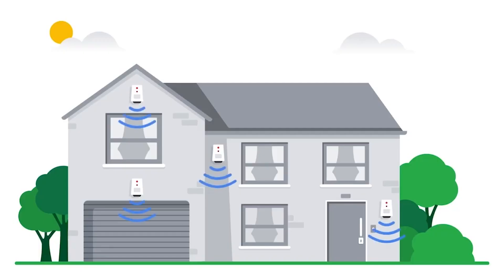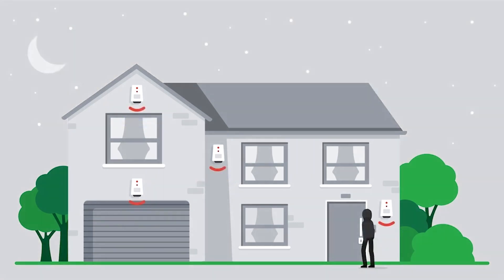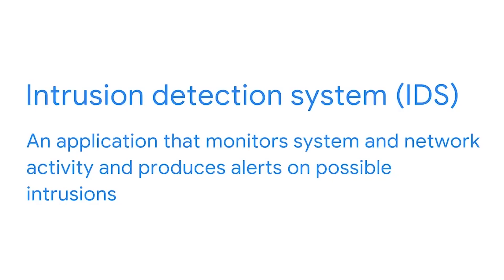We'll introduce you to intrusion detection and intrusion prevention systems. Imagine that you have just installed a home intrusion security system with intruder sensors for each entry and exit point, including doors and windows. Those sensors work by sending out sound waves, and when an object touches a sound wave, the waves bounce back to your sensor and trigger an alert to your phone, notifying you that an intrusion was detected. An intrusion detection system, or IDS, works in a very similar way — it's an application that monitors system and network activity and produces alerts on possible intrusions, collecting and analyzing system information for abnormal activities.